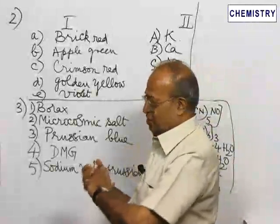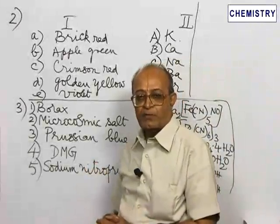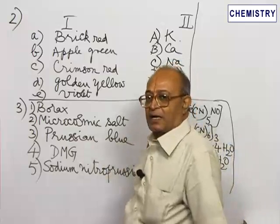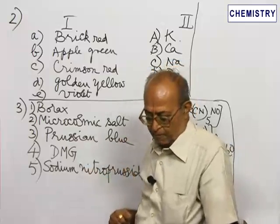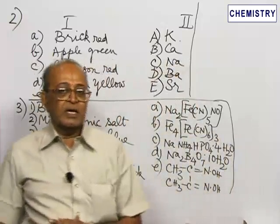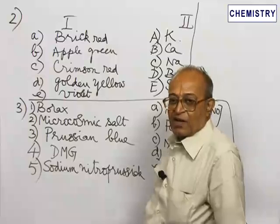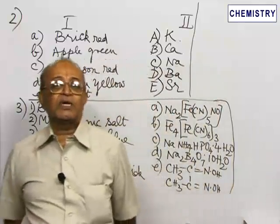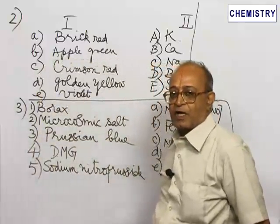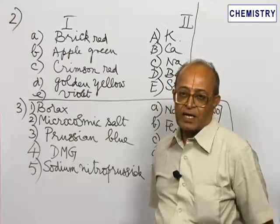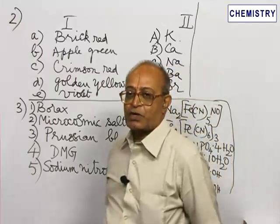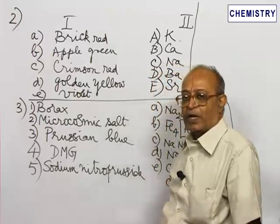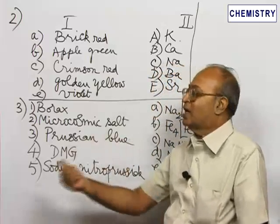Now let us consider the second question, it is also of matching type. In the last class I have not mentioned about the principle of this in qualitative analysis. There is one test known as the flame test. This flame test usually gives an idea about the presence of some basic radicals, namely metallic ions. Of course there is also one acid radical which is capable of giving a colored flame.